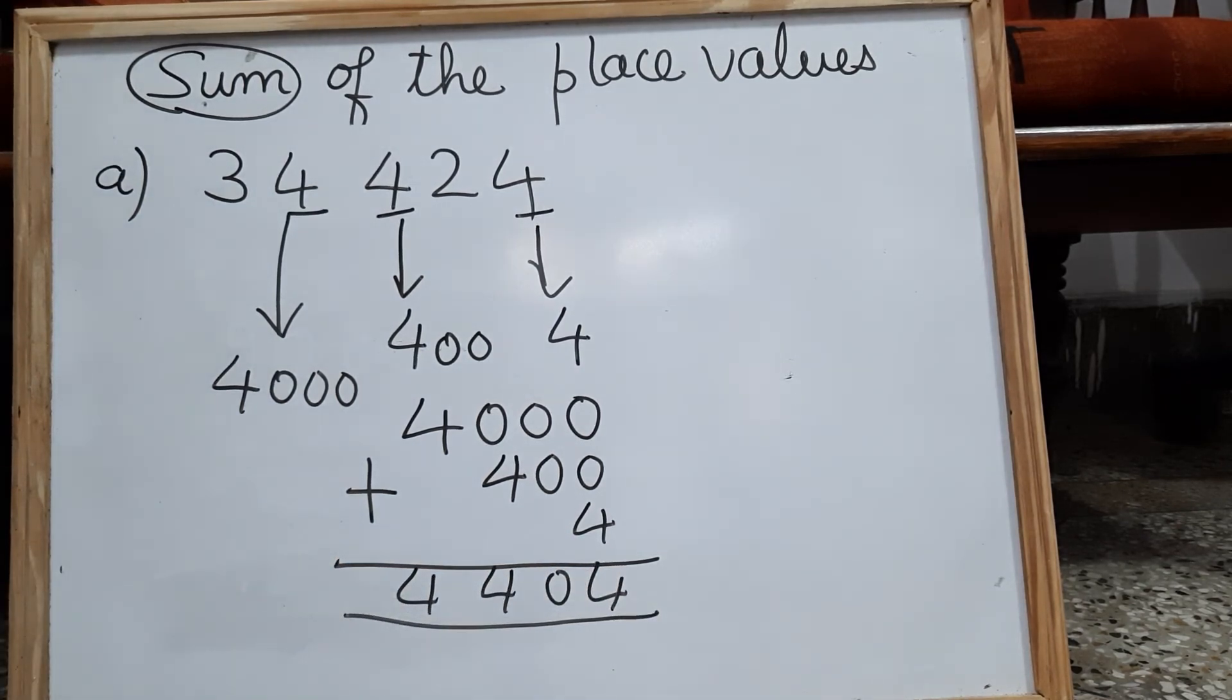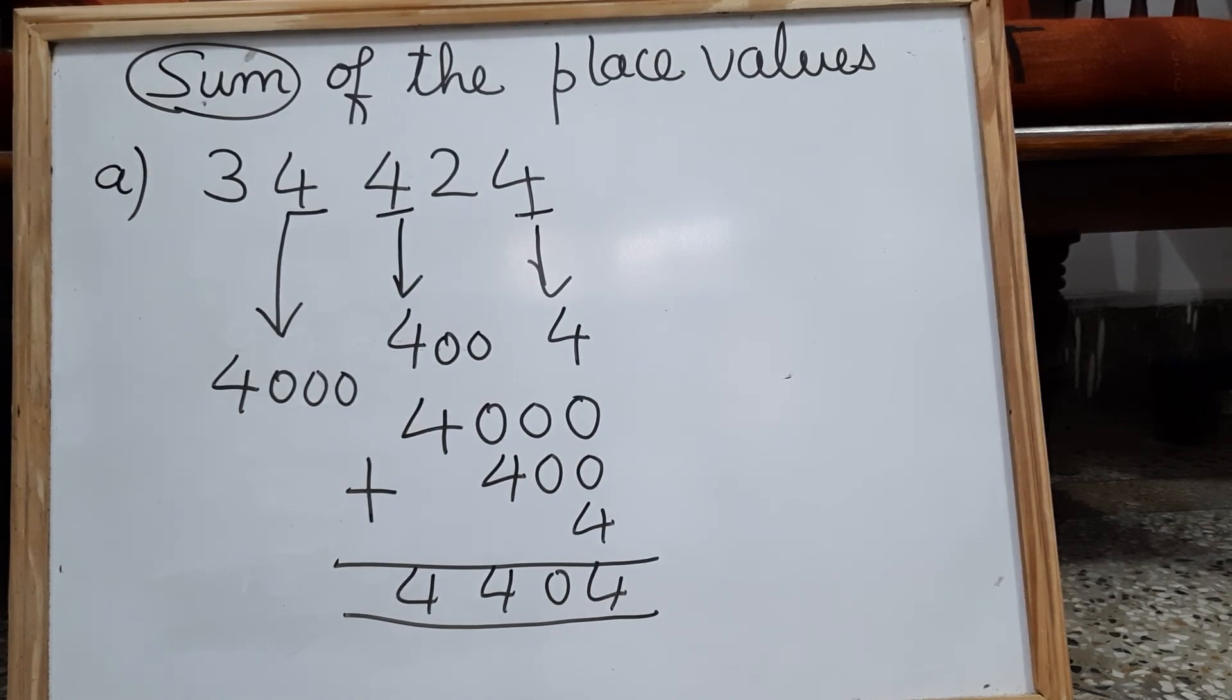Isn't it easy? Just find the place values, arrange it according to the places, and find the sum. I hope now you will be able to find the sum of the given place values.